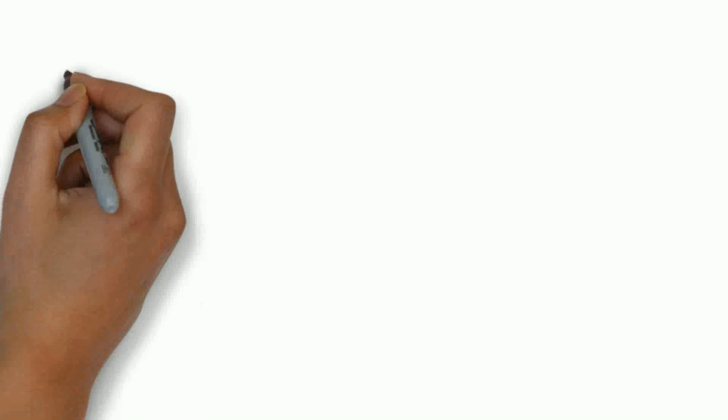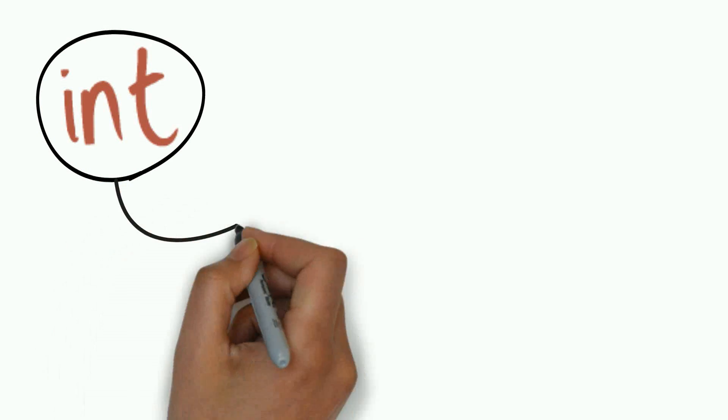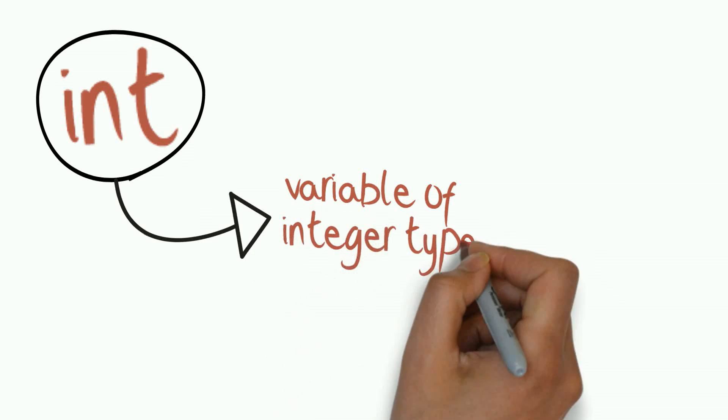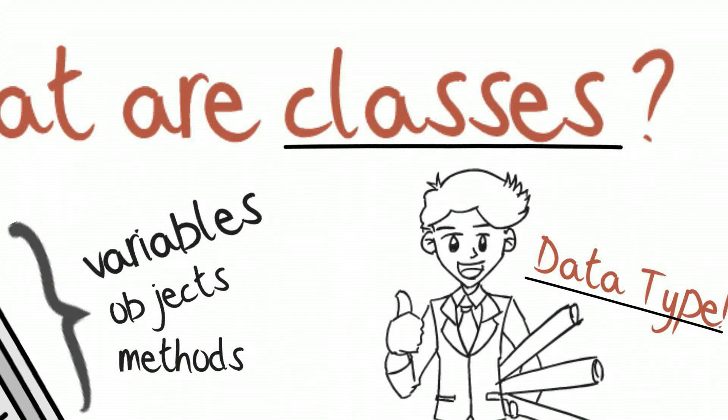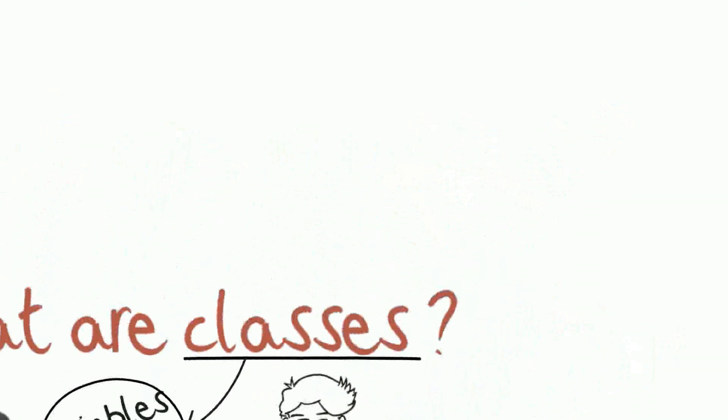For example, consider the primitive data type int. It can hold variables of type integer. Likewise, the classes are the data types with definite characteristics defining them.